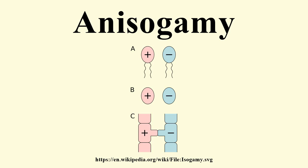Evolution of anisogamy: Anisogamy is the phenomenon of fertilization between small and large gametes, and gamete size difference is the fundamental difference between males and females. Anisogamy first evolved in multicellular haploid species after the differentiation of different mating types had already been established. However, in ascomycetes, anisogamy evolved from isogamy before mating types. The three main theories for the evolution of anisogamy are gamete competition, gamete limitation, and intracellular conflicts.